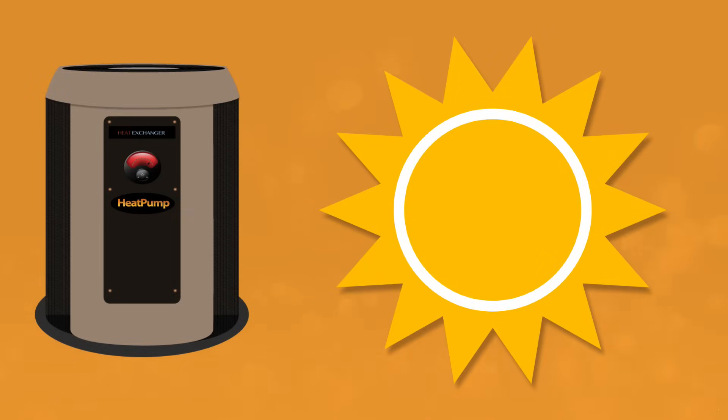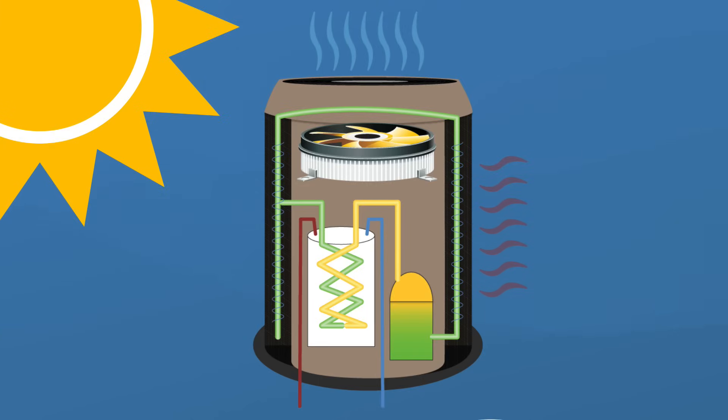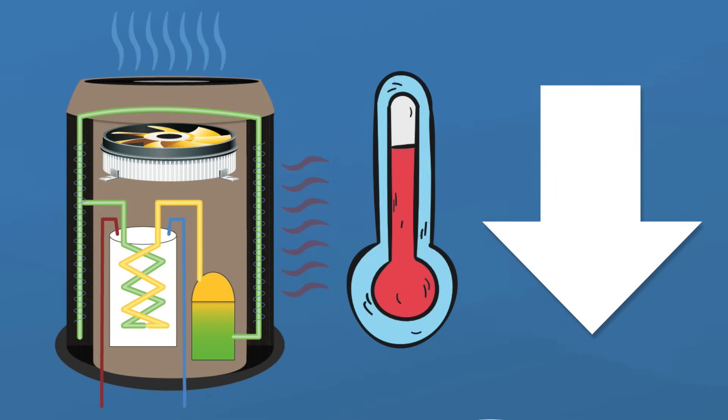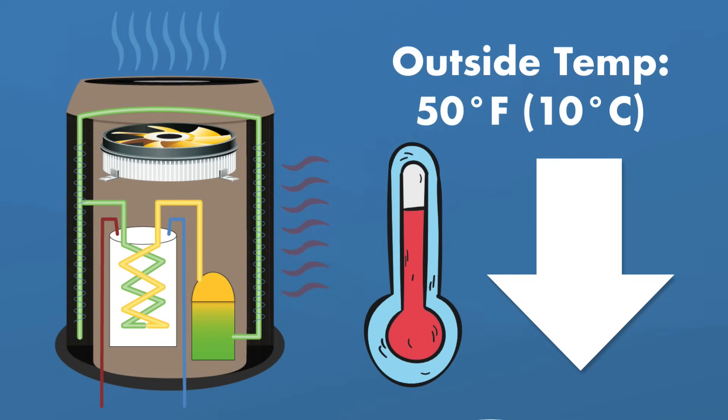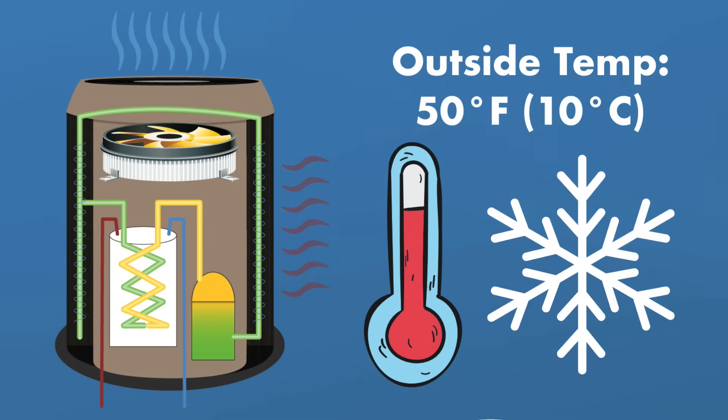It also matters what climate you live in. Your pool heat pump uses ambient temperature to heat your pool water. And that means the warmer the air is outside, the more heat the pump's evaporator can absorb, and the more efficiently it will run. Once temperatures start to drop, the heat pump becomes less and less effective. The ambient temperature needs to be at least 50 degrees Fahrenheit or 10 degrees Celsius for the unit to properly work. So if you experience consistent colder temperatures throughout the winter, a pool heat pump may not be worth it.